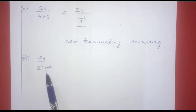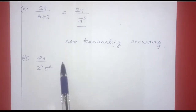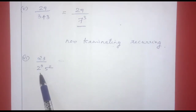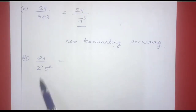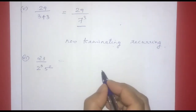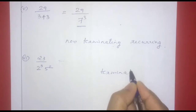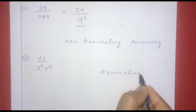Next one: 23 divided by 2 raised to 3 into 5 squared. 23 is a prime number, and p and q are co-prime. The denominator is of the form 2 raised to n into 5 raised to m. Therefore, the decimal expansion is terminating.